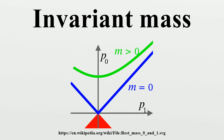A rest frame does not exist for single photons, or rays of light moving in one direction. However, when two or more photons move in different directions, a center of mass frame exists. Thus, the mass of a system of several photons moving in different directions is positive, which means that an invariant mass exists for this system even though it does not exist for each individual photon.